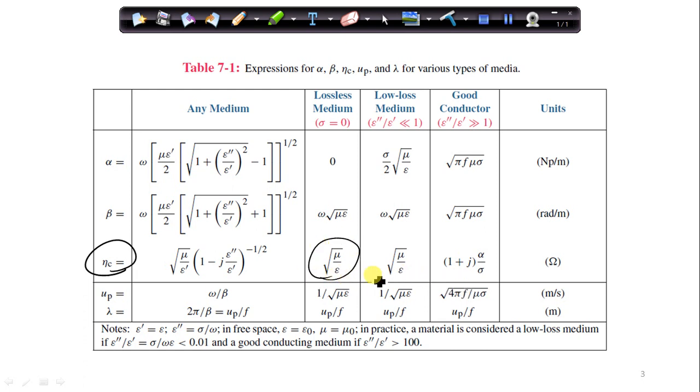And so here there's no phase shift. This is just a real number. But here, when it's a good conductor, they're 45 degrees out of phase, since the real and the imaginary part are equal.